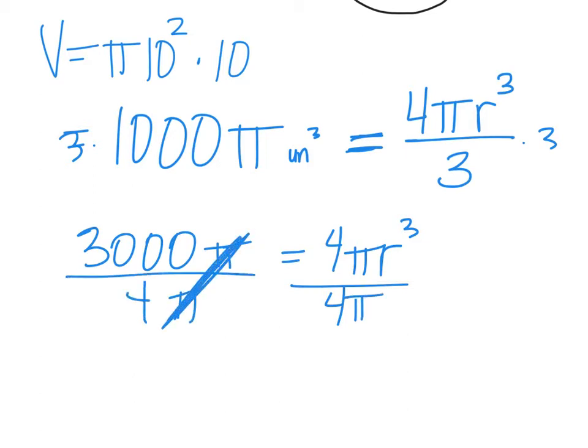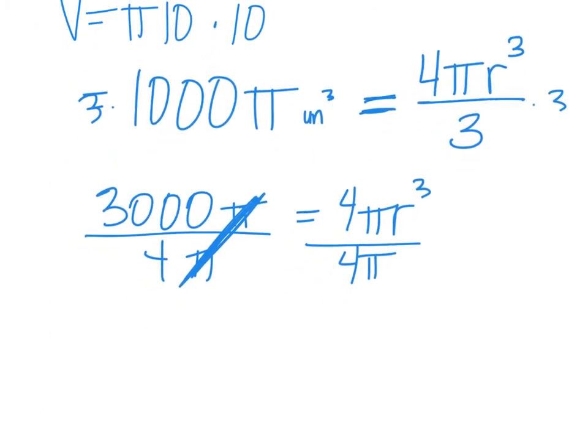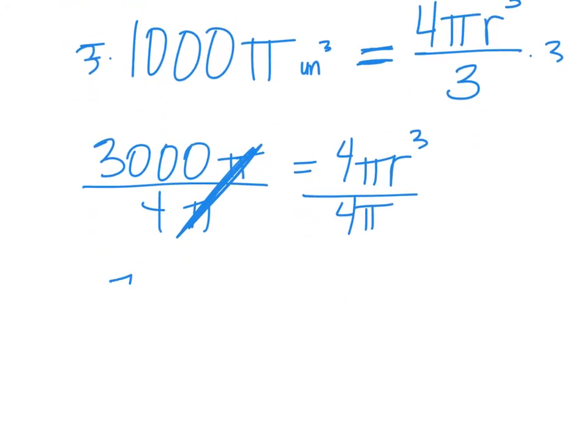The π's cancel each other out there. And 3,000 divided by 4 is 750 equals r³. Taking the cube root gives r ≈ 9.086.